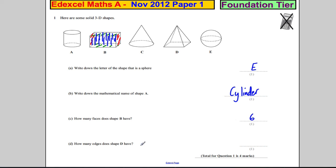So six faces. How many edges does shape D have? Well, edges are these things here. So it's not a corner or a vertex, it's an edge. One edge, two edges, three edges, four edges, five edges, six edges, seven edges, eight edges. Eight edges and we're done.